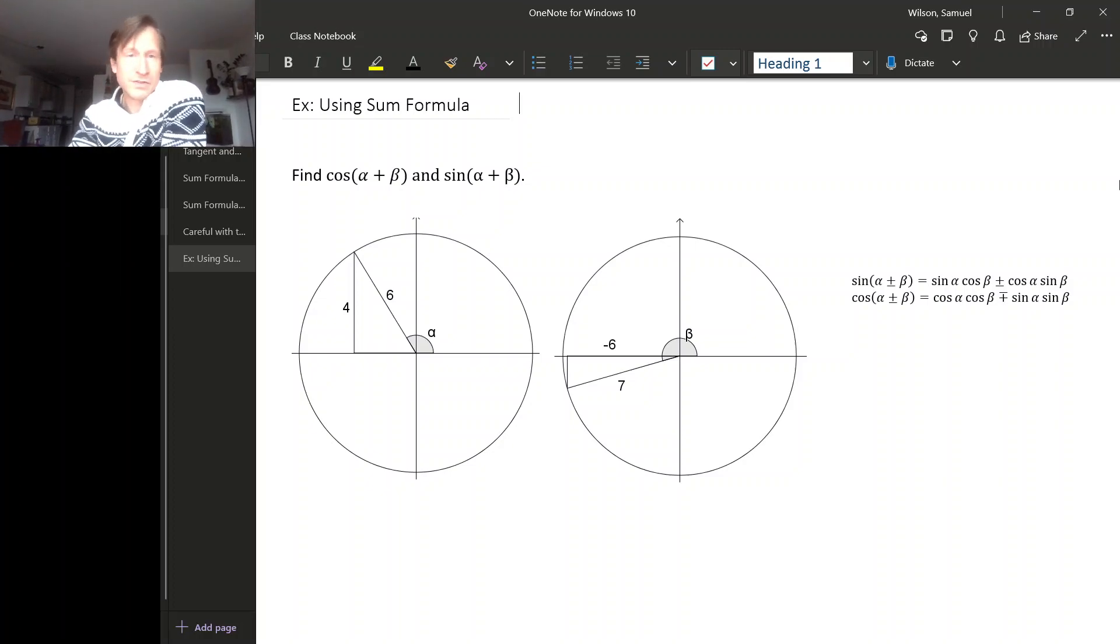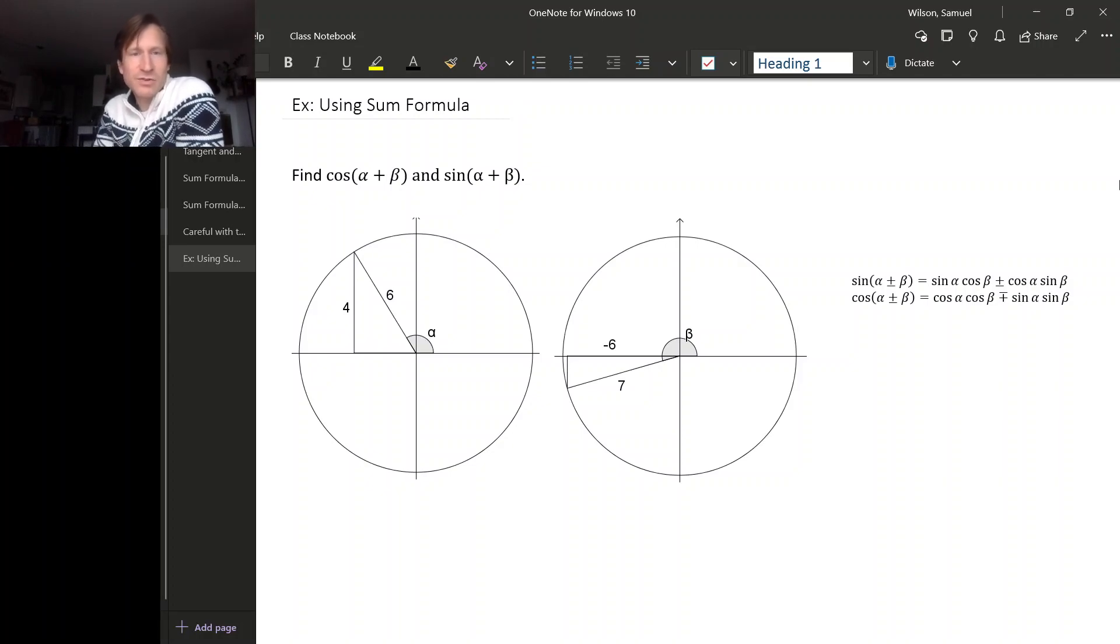Let's look at one more example of using the addition and difference formulas for sine and cosine. So with this setup, let's find cos(α + β) and sin(α + β).